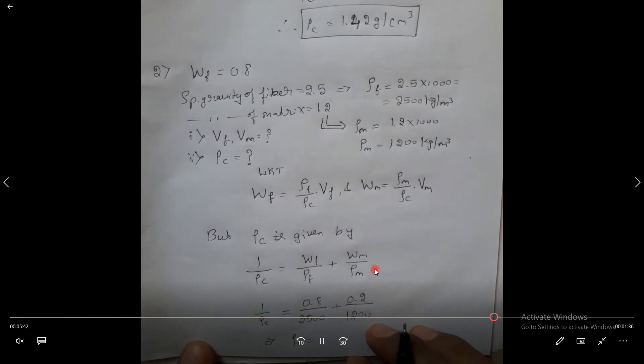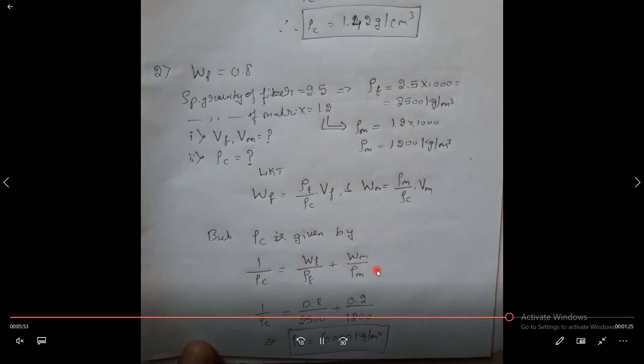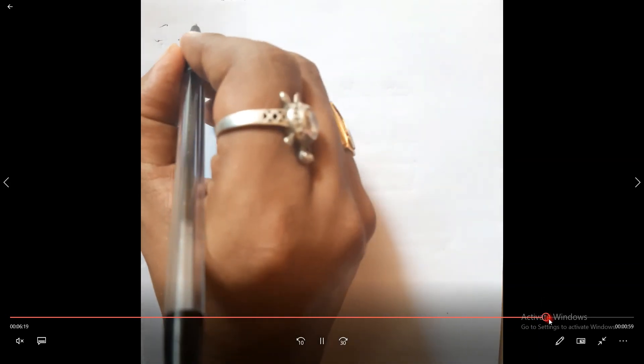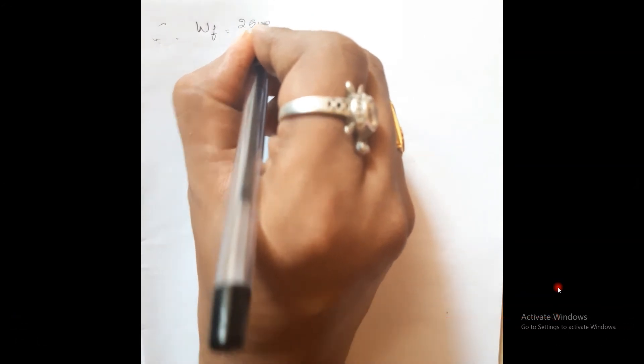Simplifying this, I am getting Rho_C. Once you calculate Rho_C, the next part is substitution of those two terms — Rho_F and Rho_C. That is 2500 divided by the density of the composite.